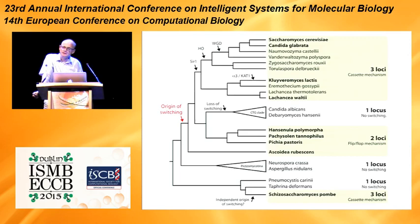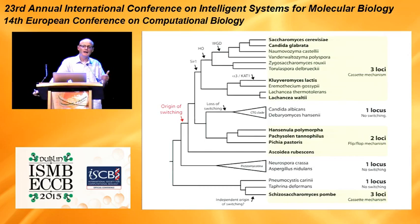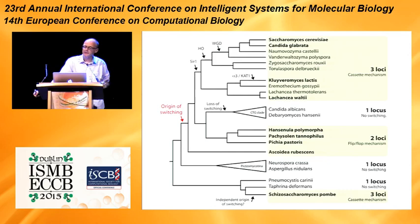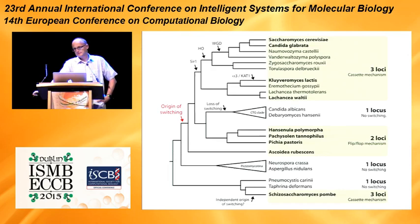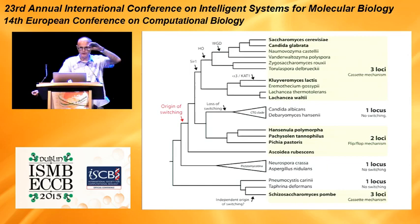Question: How come the mother cell doesn't force the child to change mating type instead, since there's a risk involved? Answer: I don't think it matters — what matters is that one of them switches. For whatever reason, evolution came up with the system where the mother switches and the child doesn't. There's an argument for proteins — junk proteins tend to get left in the mother cell and freshly synthesized proteins tend to be in the daughter. But we can't repeat the experiment to know.